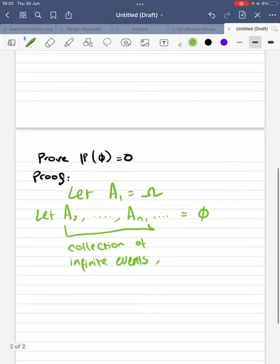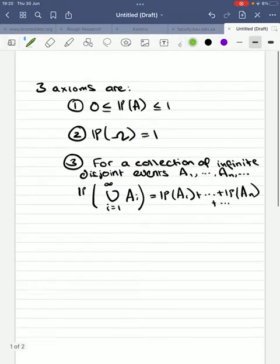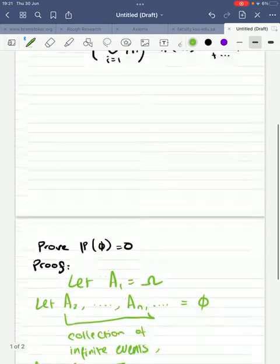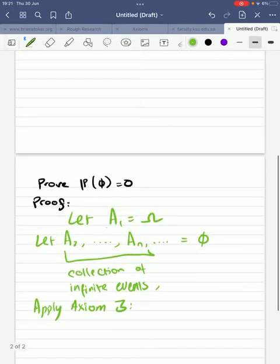Now, what we're going to do is we're going to apply axiom number three. And axiom number three says that if you have a collection of infinite disjoint events, the probability of their unions is the probability of their individual sums. Now, we have a collection of infinite events, certainly, because we've got A1 followed by infinite events, which are just the empty set. But are these events disjoint?